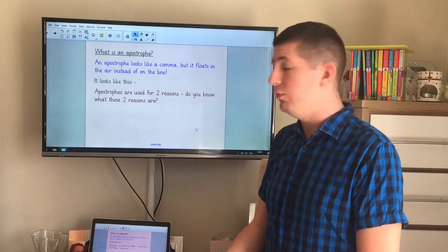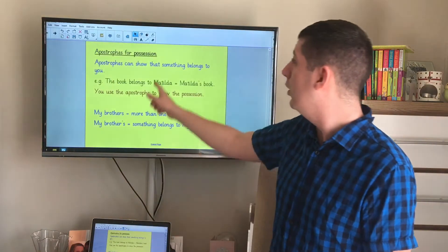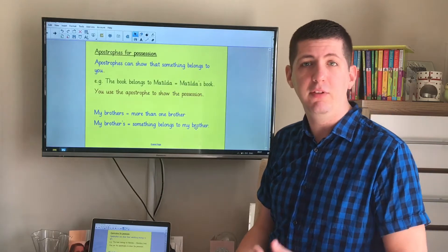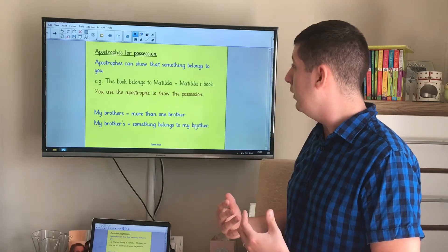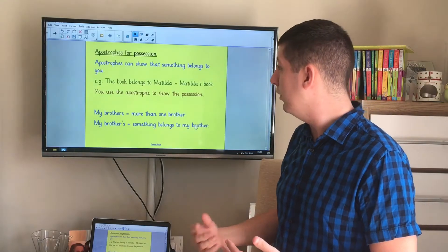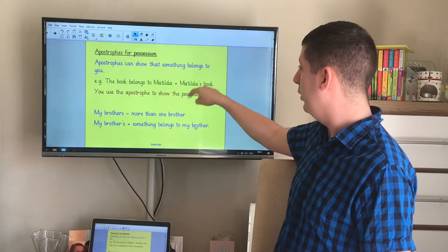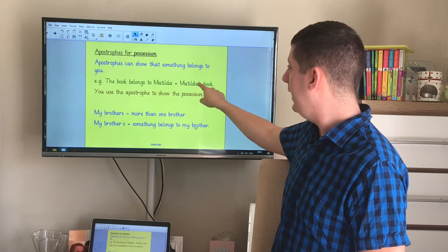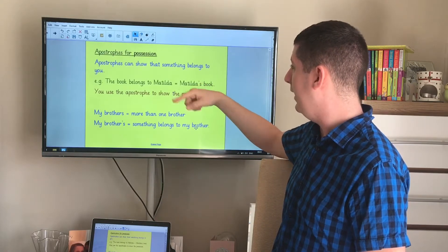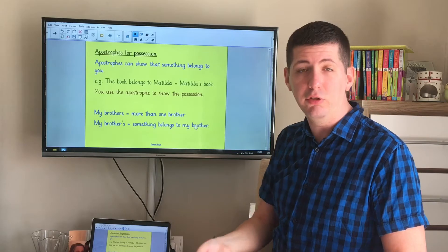Well one of the reasons is possession. Possession means it belongs to you, it's something that's yours. So it shows that something belongs. For example, if the book belongs to Matilda you would say Matilda's book, and after the A for Matilda you put an apostrophe S to show that it belongs to her. It shows possession.